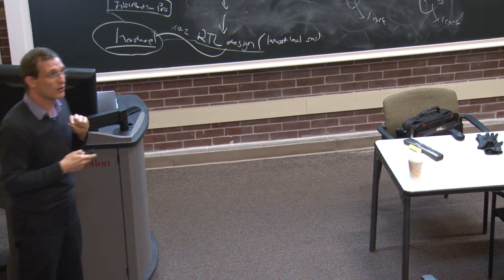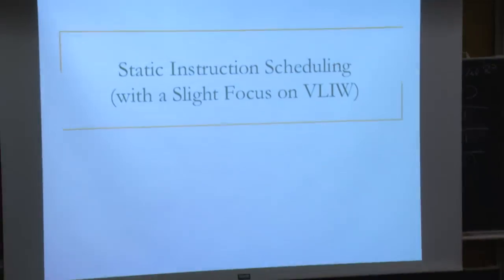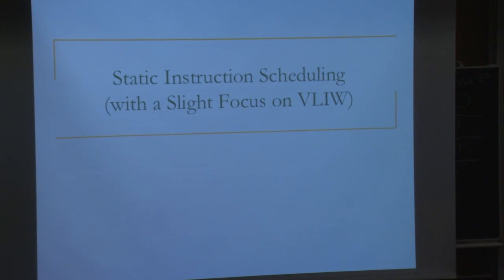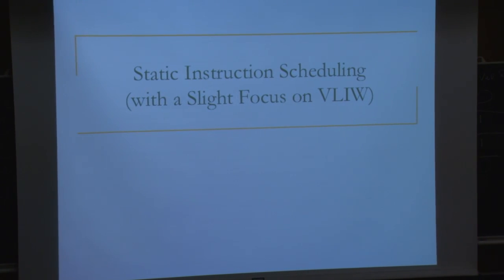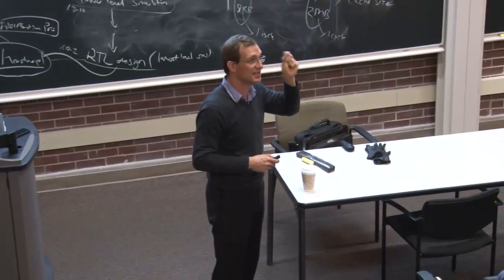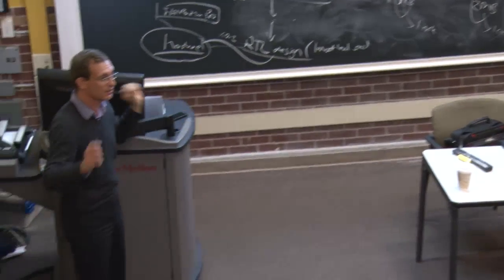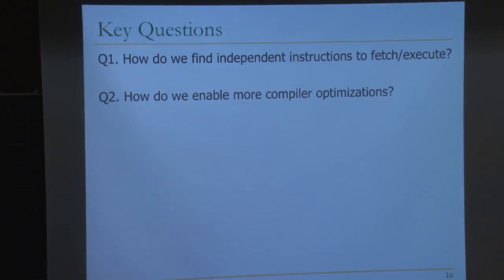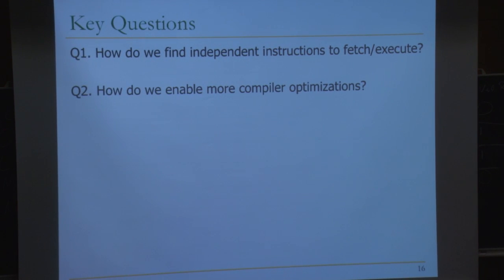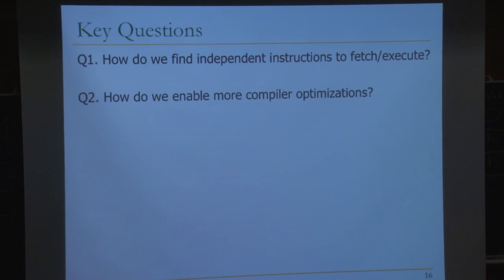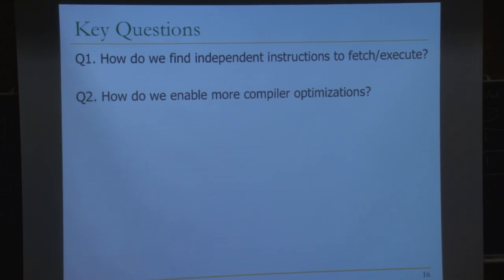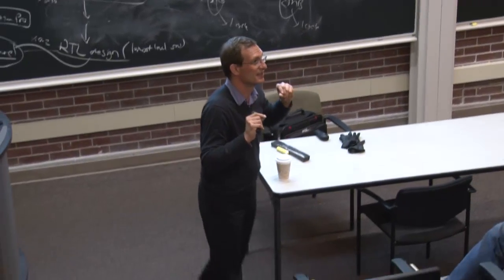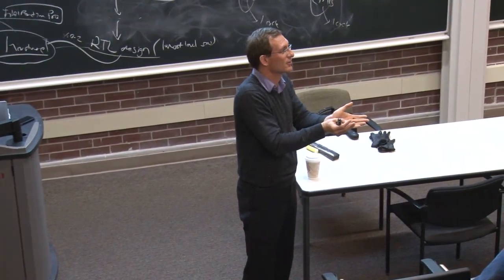Our focus will be slightly on VLIW since VLIW is where you really need static scheduling to be well done—that's the only thing you rely on, as there is no dynamic scheduling in classic VLIW. Key questions: how do we find independent instructions to fetch and execute in a VLIW machine? How do we enable more compiler optimizations? Instruction scheduling benefits from compiler optimizations—if you can eliminate dead instructions or reduce the number of instructions to execute, that's better.